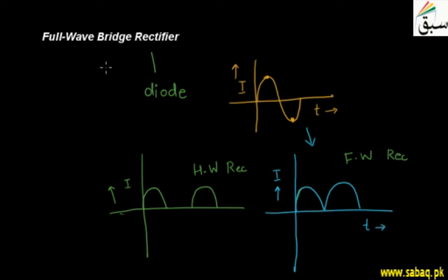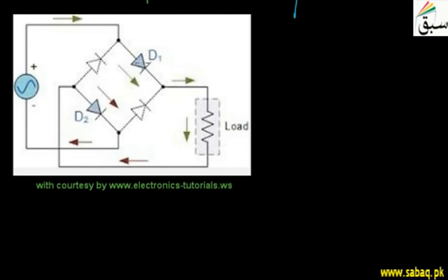The bridge rectifier is a special arrangement. The diodes are connected in branches joined with a special arrangement, and so they are called a bridge. This bridge arrangement gives us the full wave bridge rectifier. We will discuss this device through a circuit diagram. You can see that I have put a circuit diagram in which we have an alternating current source and also 4 diodes in a bridge arrangement.